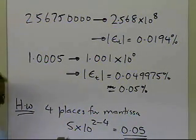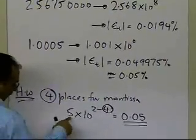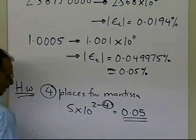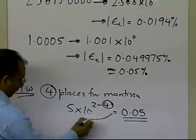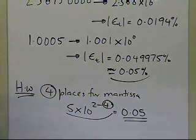So what you are finding out here is that if I take this 4 and put it right here, I get 5 times 10 to the power 2 minus 4, I get 0.05. Does this formula have something to do with how much relative true error I'm going to get in every case? Will it be less than 0.05 percent?